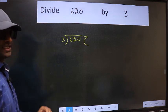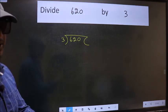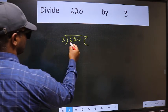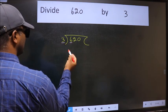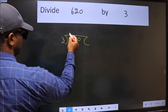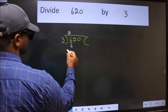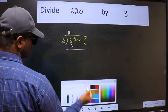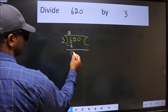This is your step 1. Next, here we have 6 and here 3. When do we get 6 in the 3 table? 3 times 2 is 6. Now, we should subtract. We get 0.